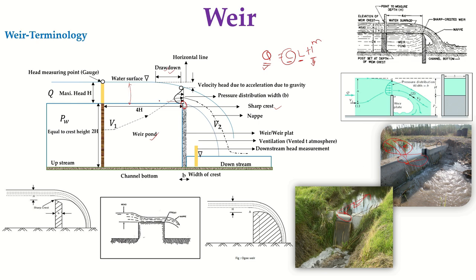The head is measured at four times the head distance back from the weir pond on the upstream side, and the crest height is two times the head. The upstream side, downstream side, and crest width are clearly defined. The velocity from the upstream side is higher, but by creating the obstruction of the weir, the velocity is reduced a little bit. This is the pattern of how velocity distribution takes place in a particular weir.